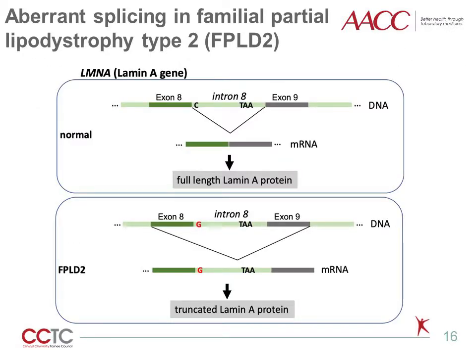Alternative or aberrant splicing can also cause rare germline disorders and be detected by RNA-Seq. For example, familial partial lipodystrophy type 2, or FPLD2, is a rare germline disorder characterized by abnormal distribution of adipose tissue in the body, and it is caused by mutations in the LMNA gene, which codes for lamin A. Dr. Morrill and colleagues found that a C-to-G mutation in the LMNA intron 8 consensus splice donor site causes aberrant splicing where intron 8 is retained. Because of a premature stop codon in intron 8, translation stops short of exon 9 and results in a truncated lamin A protein.